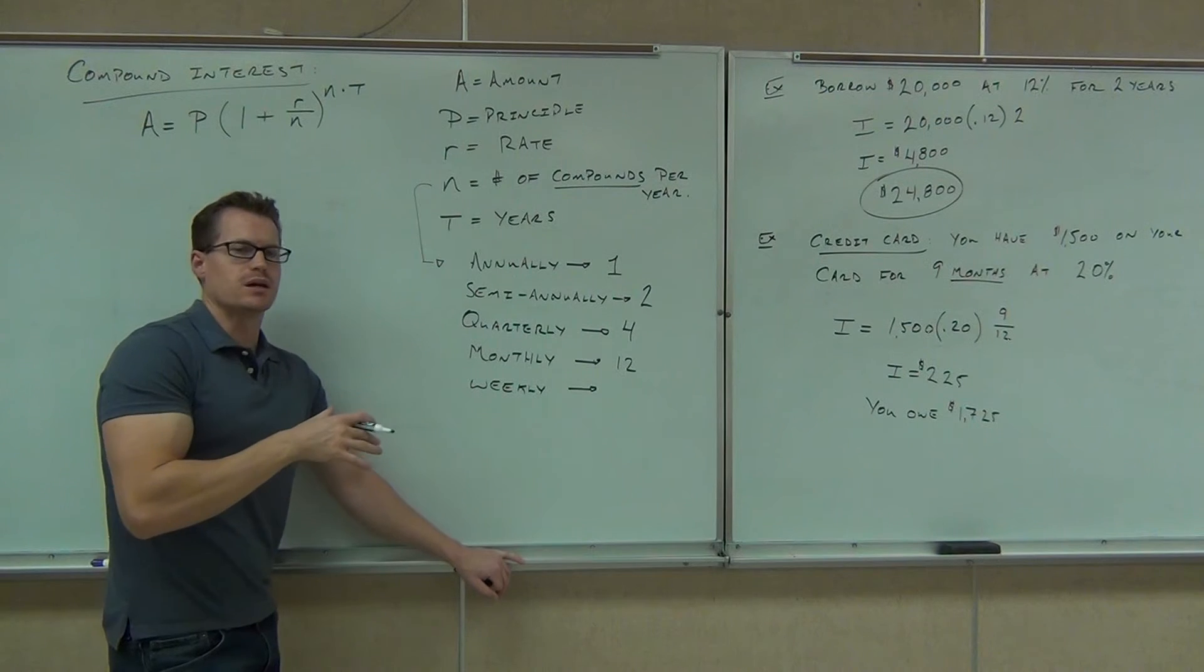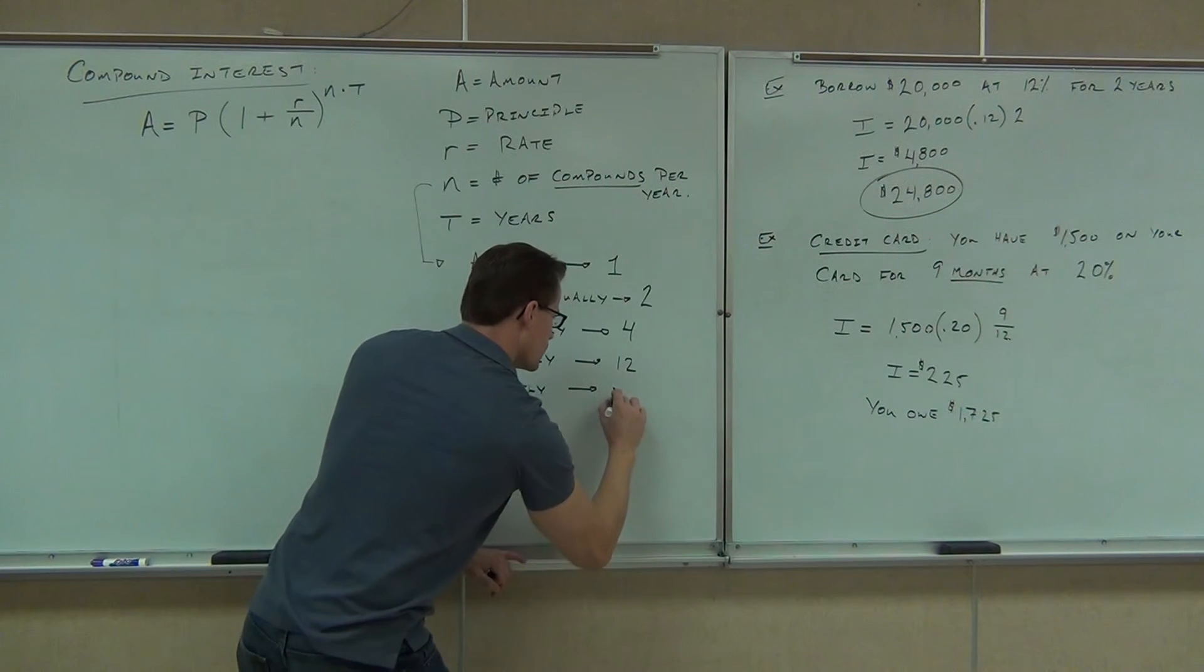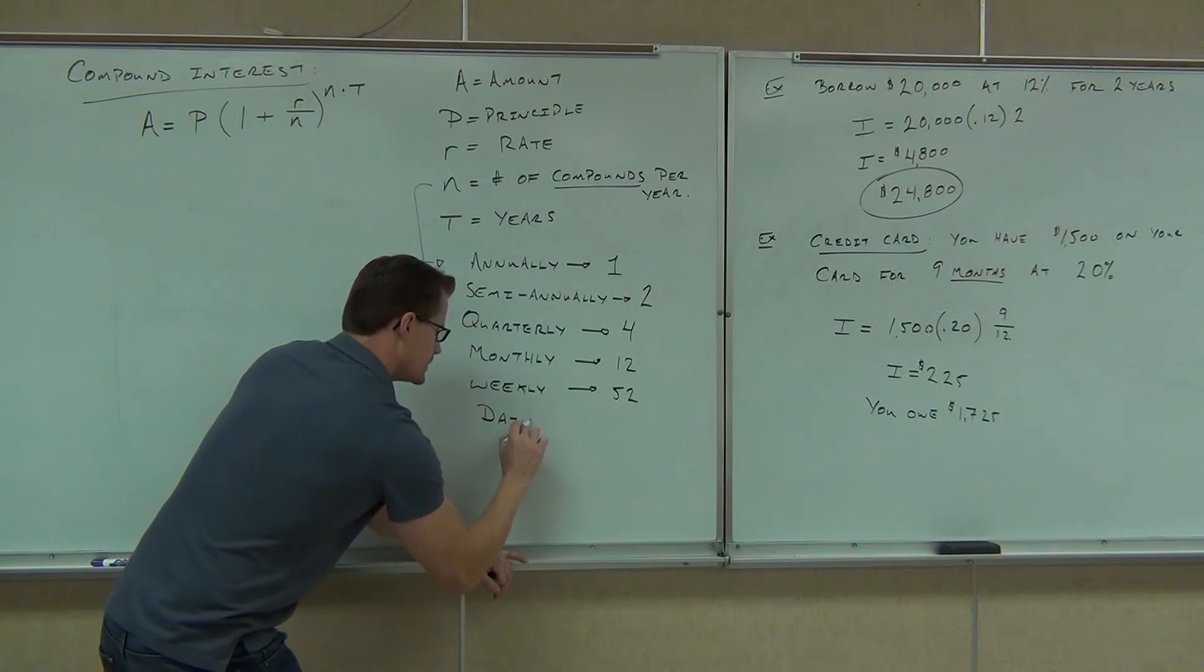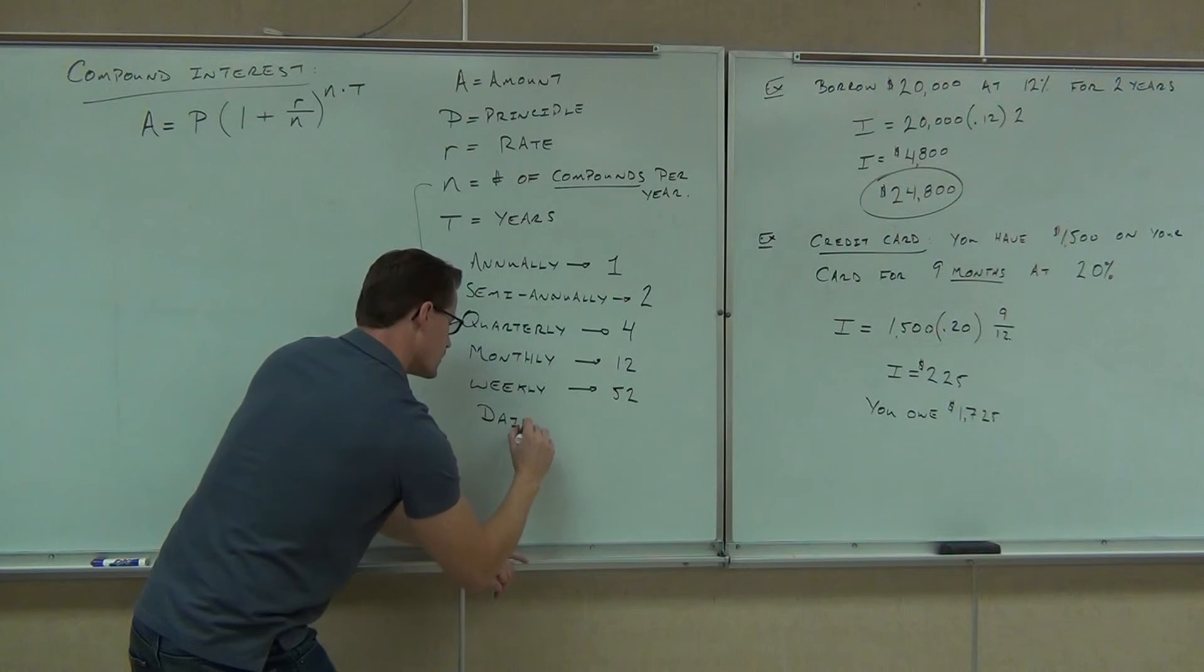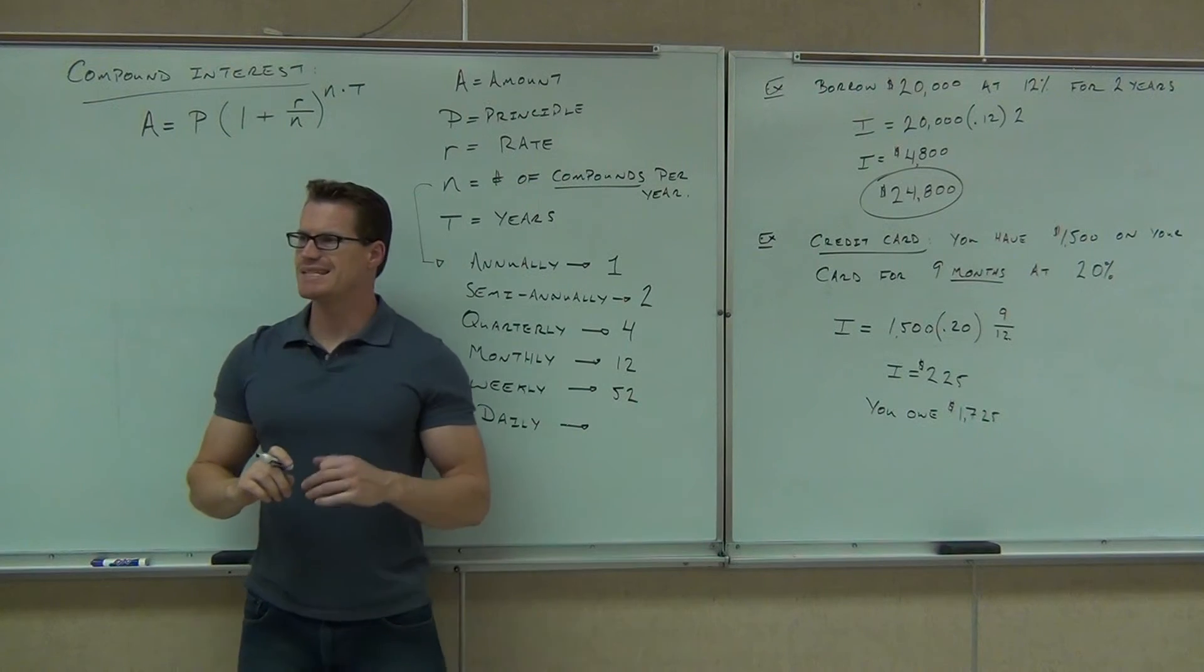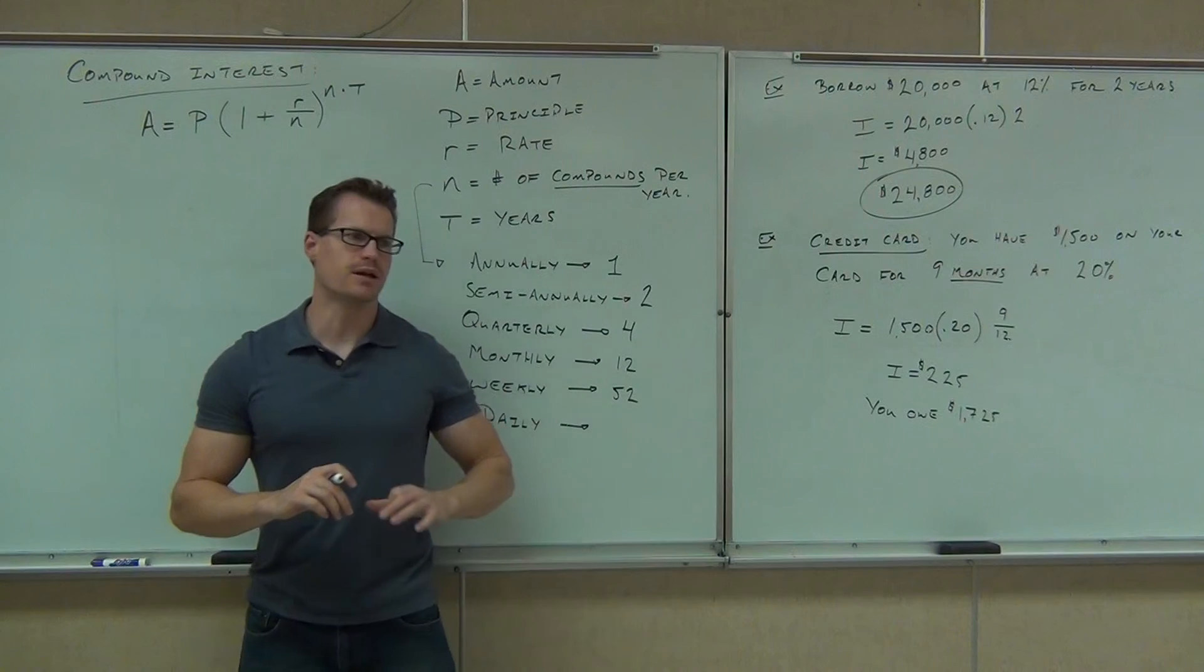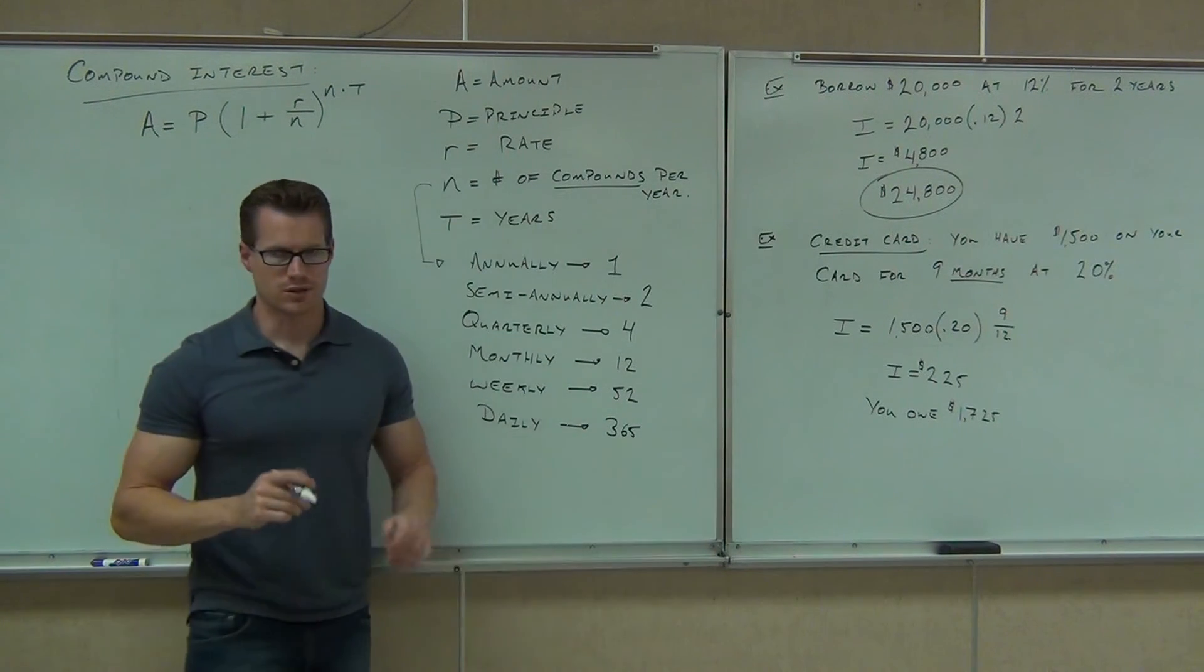Weekly means every week. Get interest every single week. There's 52 weeks in a year. Daily, the last one we'll talk about in this class. There's 365 days in a year. So if you had daily compound interest, that means every single day, you're getting a little interest tacked on. A little more, a little more, 365 times for the whole year.